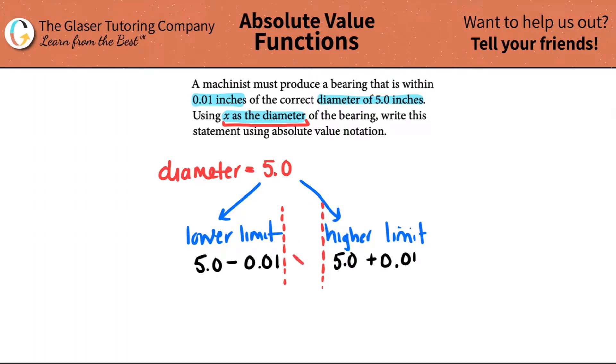Now I just have to relate this whole thing in one type of mathematical sentence. Let's start with the higher limit first. If this is the highest limit, that means that the relationship between the actual diameter and the higher limit, the higher must be greater than. So technically, x must be less than or equal to the higher limit.